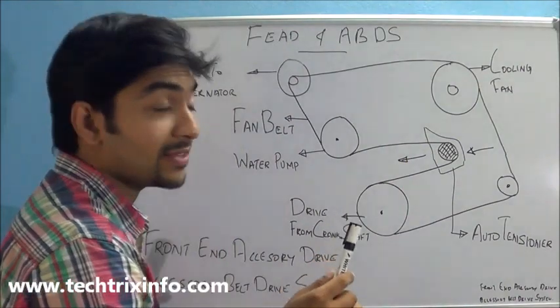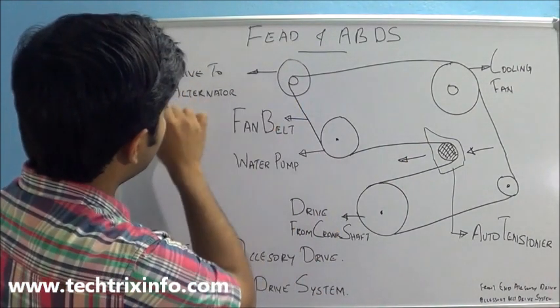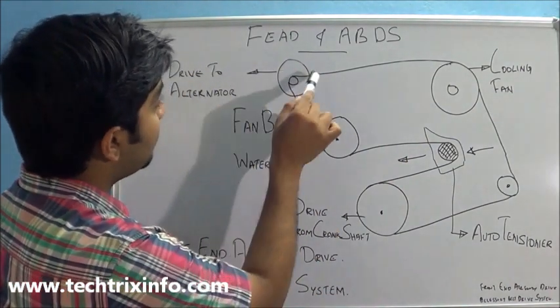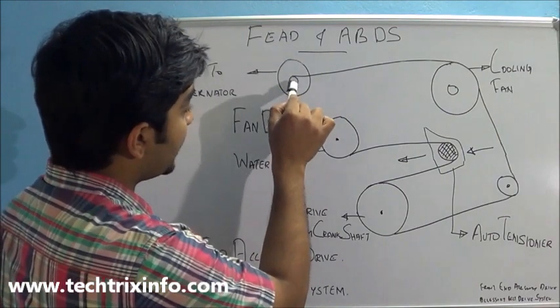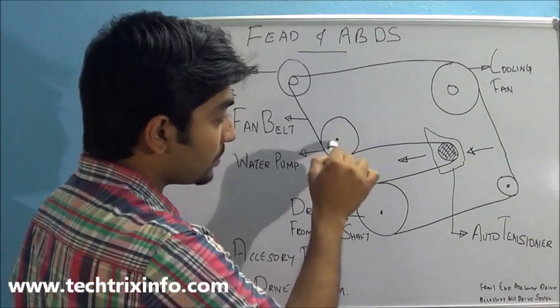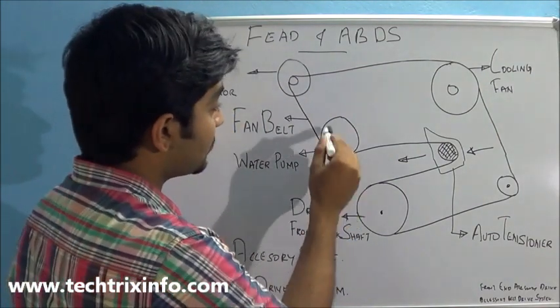Let's see which all are these accessories. Here we have the alternator. So the belt gives drive towards the alternator over here. Here we have the water pump for cooling. So it gets its drive here.